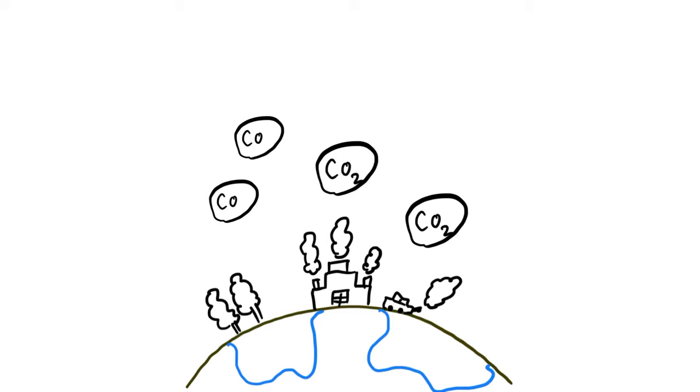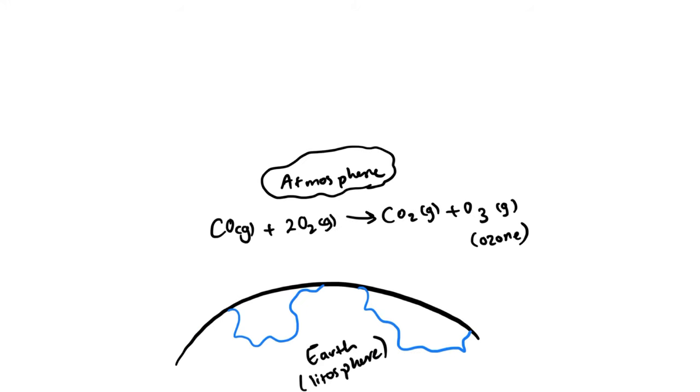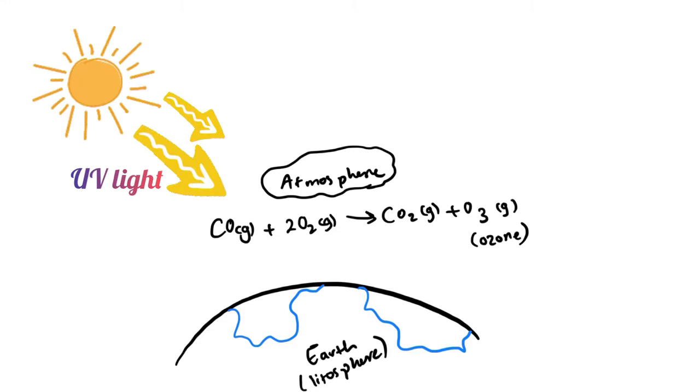Carbon dioxide and carbon monoxide are the major gases released due to human activities and natural processes. They are mostly released from lithosphere. There are tons of reactions that involve these two chemical compounds. In the atmosphere, carbon monoxide reacts with oxygen to form carbon dioxide and ozone. UV light from the sun is also involved in this reaction.